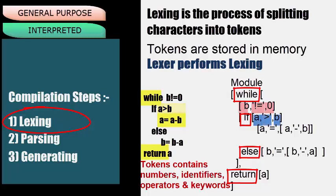The condition also has a right-side variable. The second square bracket is for the block statement, which is an assignment statement. In this square bracket, we have an assignment variable, an equal-to operator, and a square bracket for the formula. The formula has a left-side variable, an operator minus, and a right-side variable. The else part has no condition but has a block statement, which is also an assignment statement with an assignment variable, equal-to operator, and a square bracket for the formula. Other than while, we have a return statement that returns variable A.